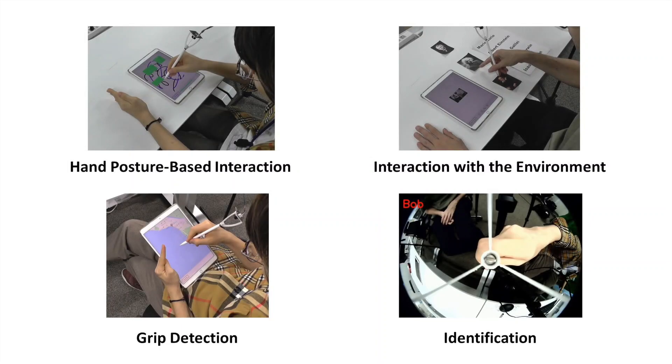Hand posture-based interaction, interaction with the environment, grip detection and identification are just a few examples in which PenSight can be leveraged. There are doubtless many other possible scenarios.